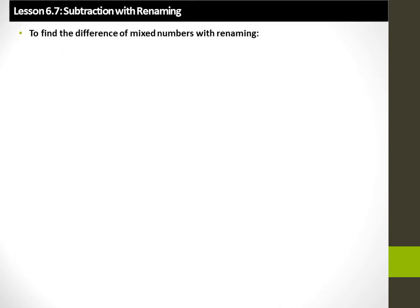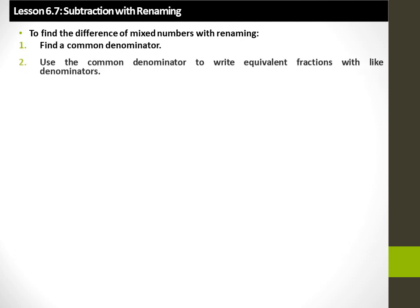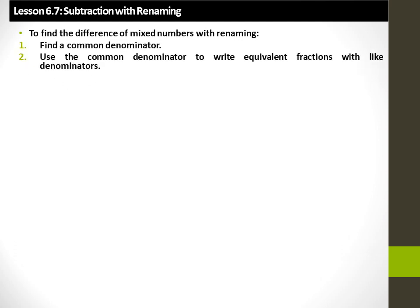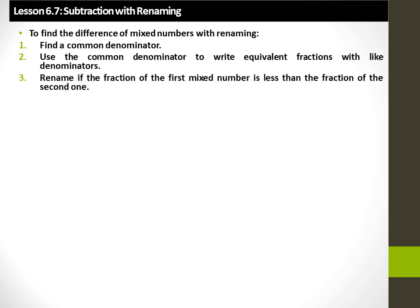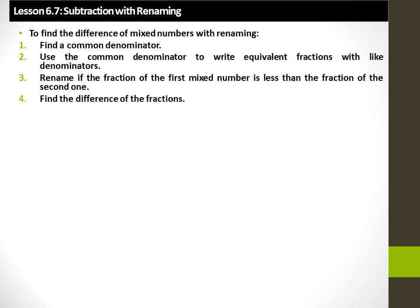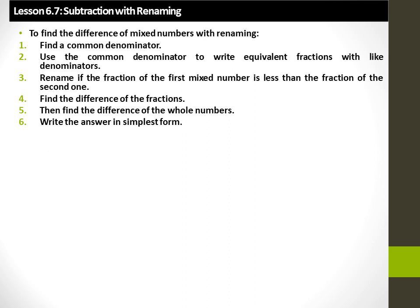Subtraction with renaming. To find the difference of mixed numbers with renaming: 1. Find the common denominator. 2. Use the common denominator to write equivalent fractions with like denominators. 3. Rename if the fraction of the first mixed number is less than the fraction of the second one. 4. Find the difference of the fractions. 5. Find the difference of the whole numbers. 6. Write the answer in simplest form.